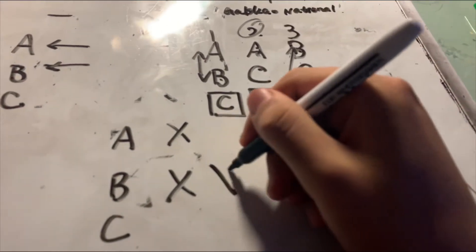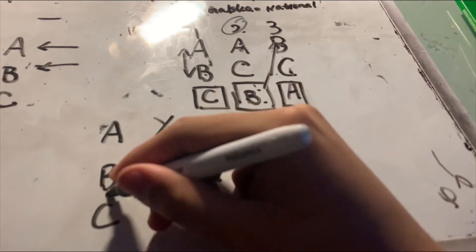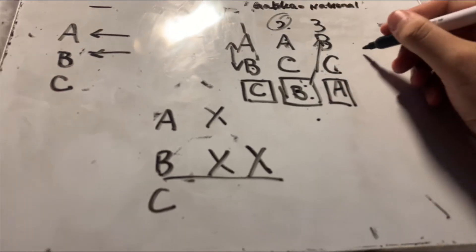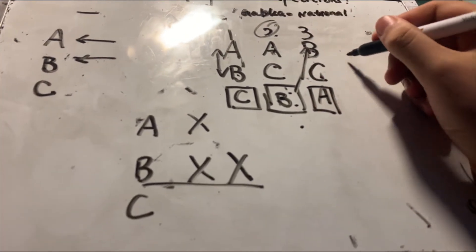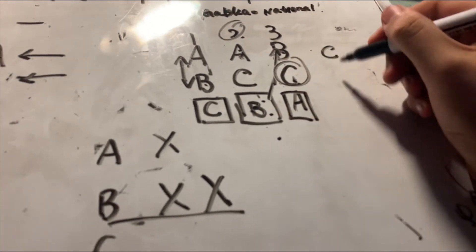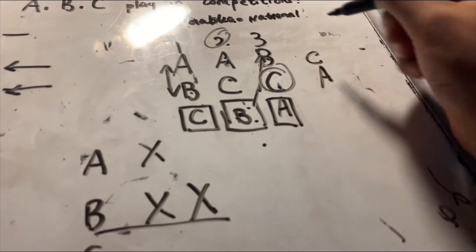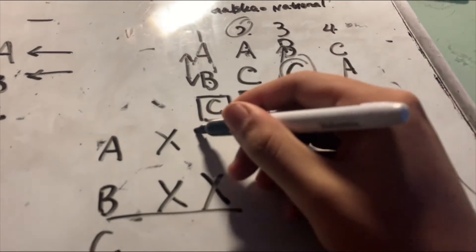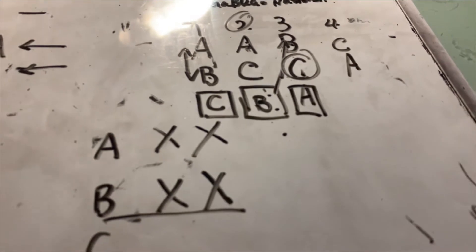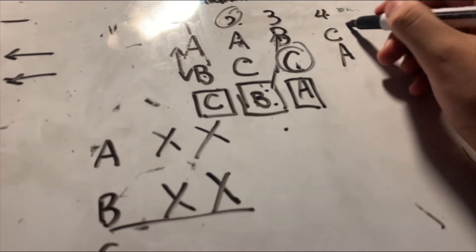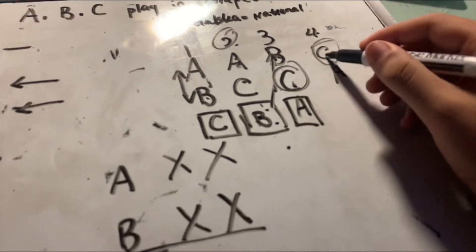Now B has lost two times and is eliminated. C wins. So it becomes a direct competition between C and A in the fourth round. In the fourth round, A loses and C wins, and C is the only winner.